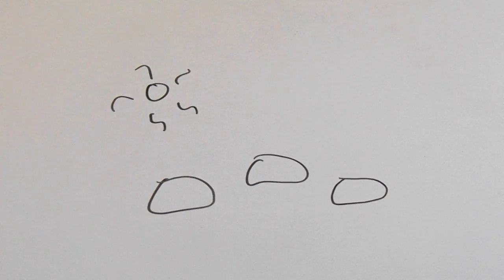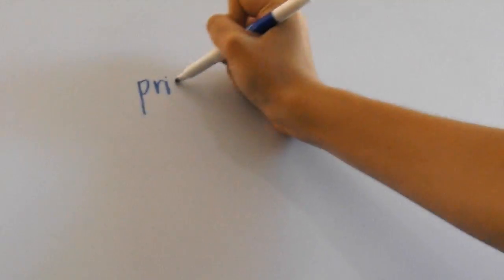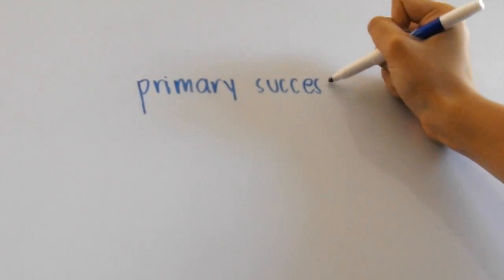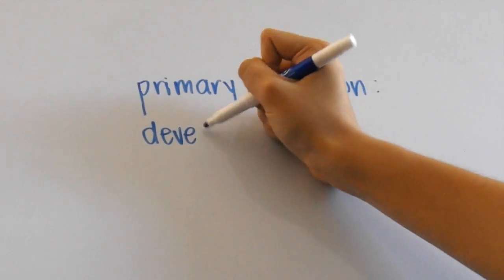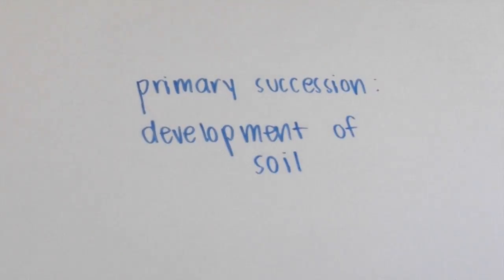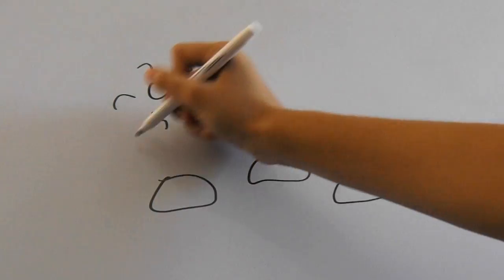This is where primary succession starts. It is characterized by the development of soil in an area. Primary ecological succession is mainly seen in areas where there has been no organisms at all before.